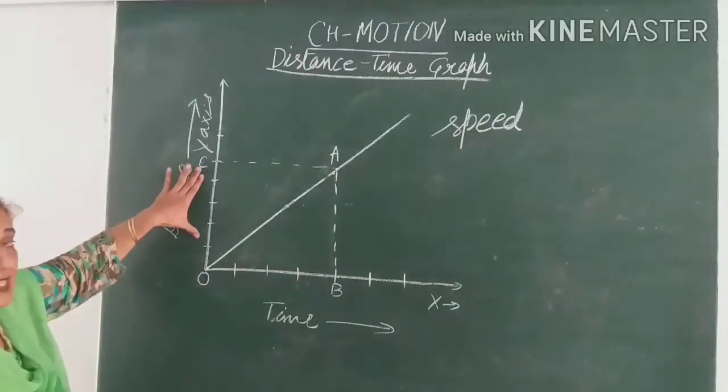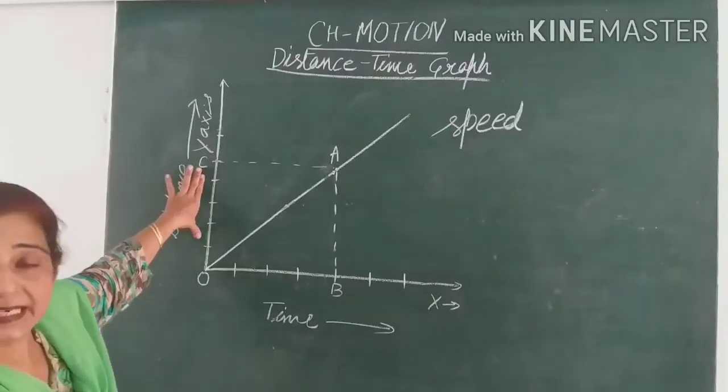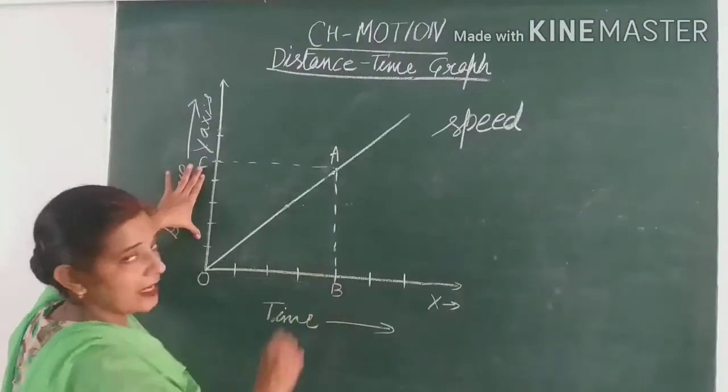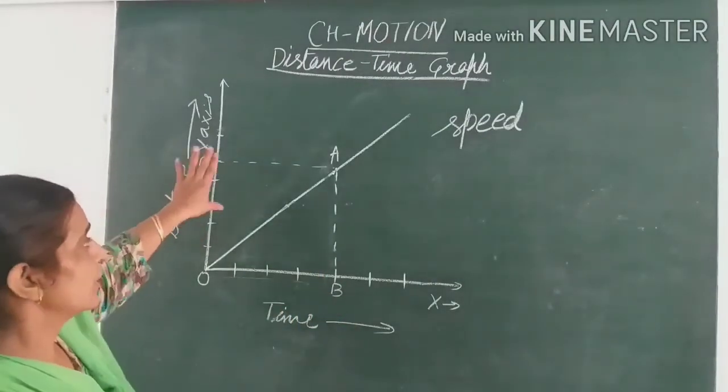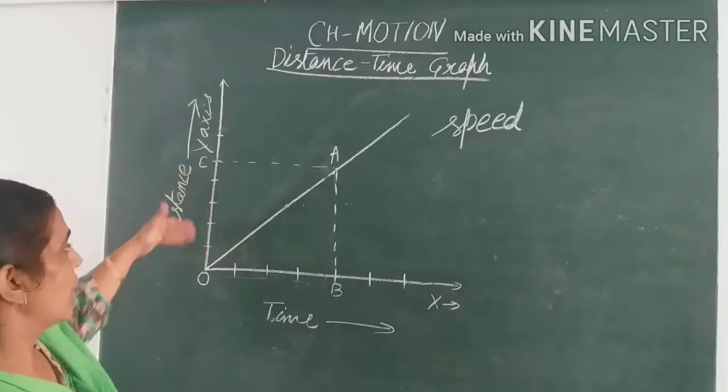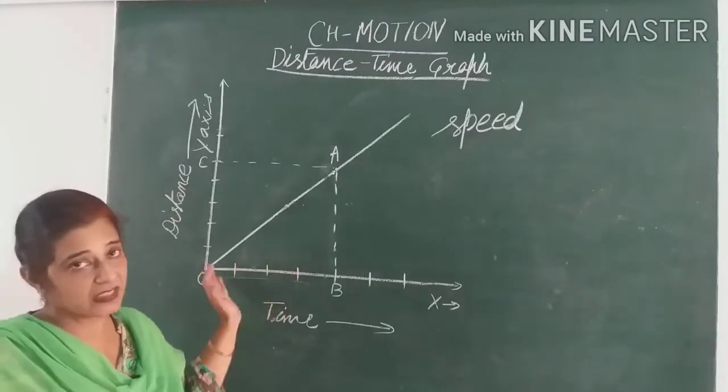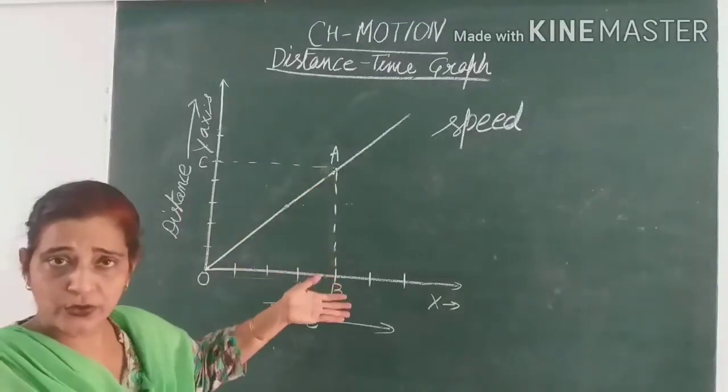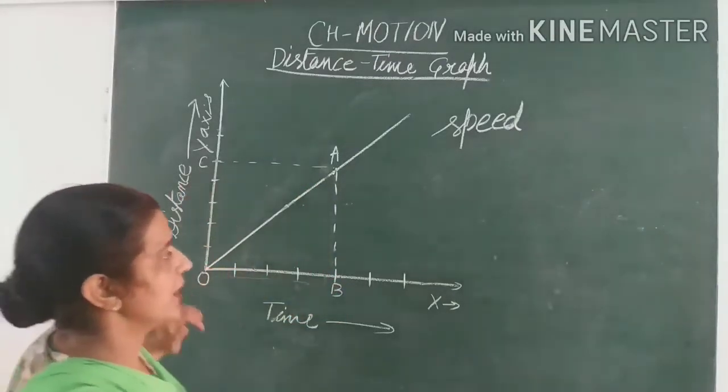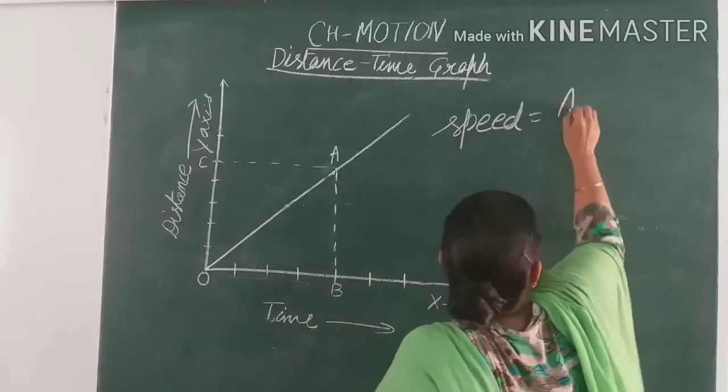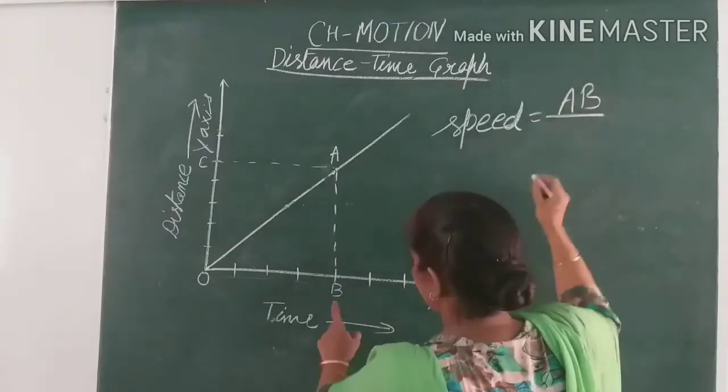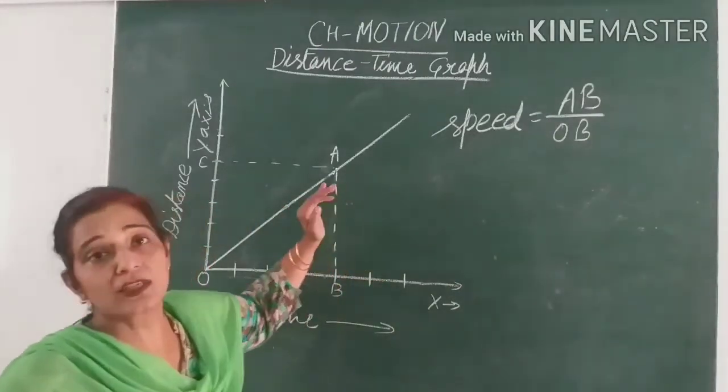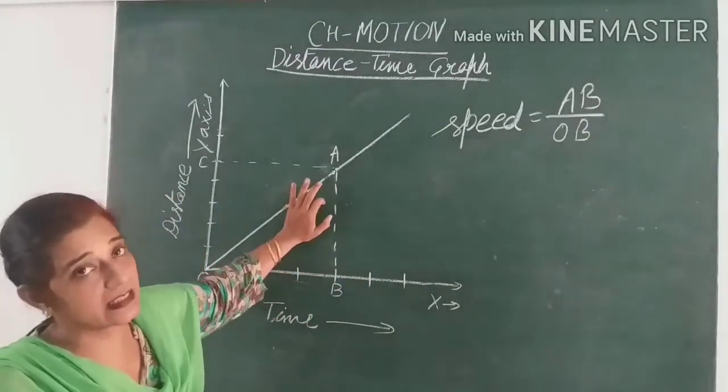So speed can be found out with the slope or gradient of this graph. Now here, OC is equal to distance traveled by a body, and this distance was covered in time OB. So we will write OC upon OB to find out the speed. But as we know, AB is also equal to OC. So we can write here AB upon OB. This is the slope of this distance-time graph.